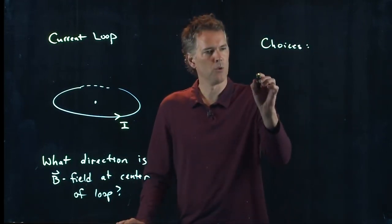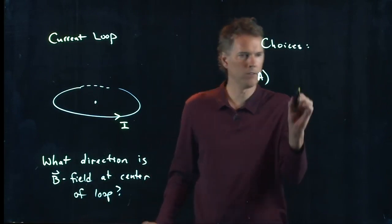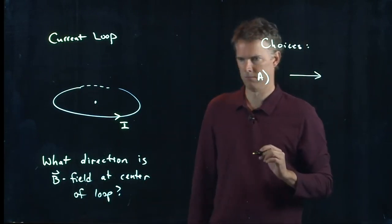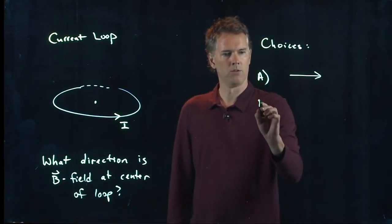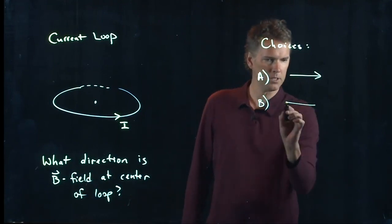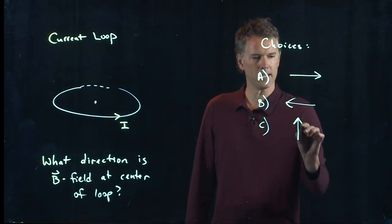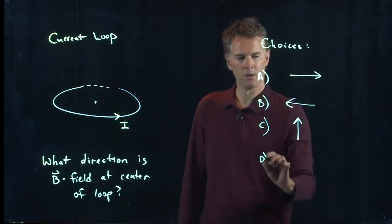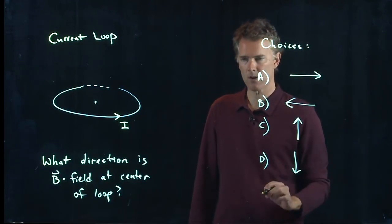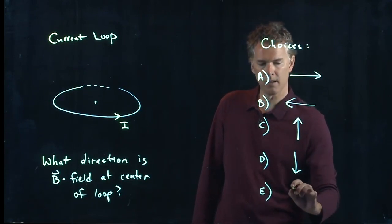Choice A is pointing to the right, choice B is pointing to the left, choice C is pointing up, choice D is pointing down, and choice E is there is no B field.